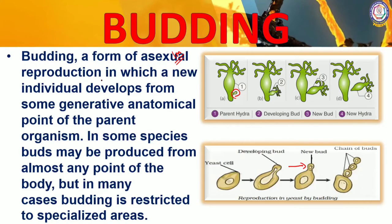Budding is a form of asexual reproduction in which a new individual develops from a generative anatomical point of the parent organism. The bud cannot develop just anywhere on the body — it can develop only in the stem region, which is the generative anatomical point. In some species, buds may be produced from almost any point of the body, but in many cases budding is restricted to specialized areas, such as the anterior end.